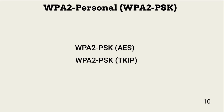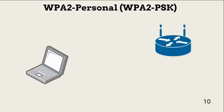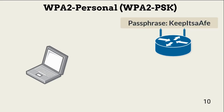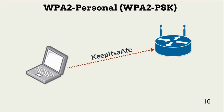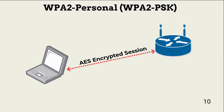We usually find WPA-2 Personal in homes, home offices, and small businesses. The administrator sets a passphrase in the router with a length from 8 to 63 characters. In order to access the wireless network, the laptop or other wireless device must provide the passphrase for authentication. After authentication, the connection is encrypted with AES symmetric encryption.